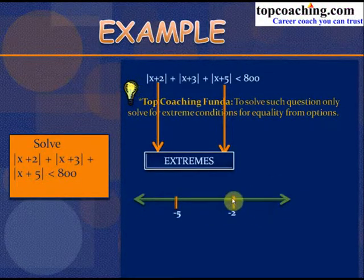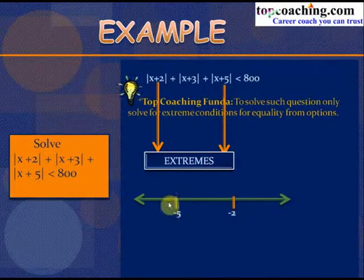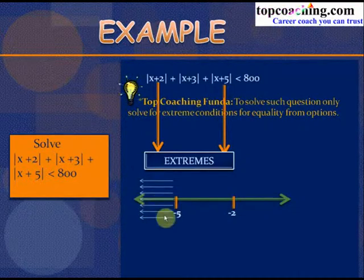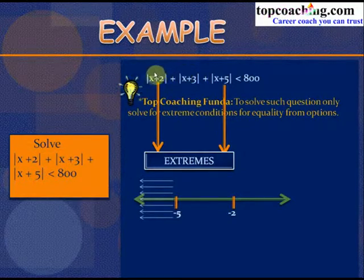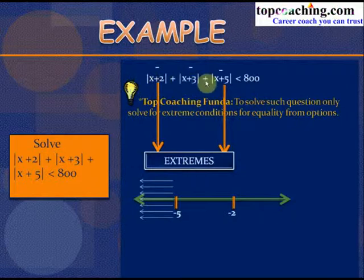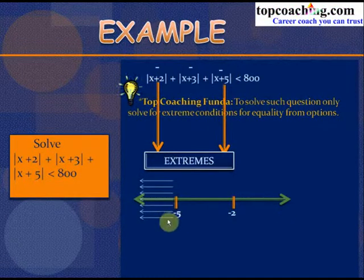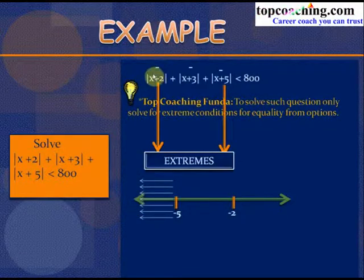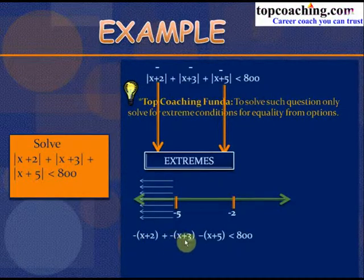When x < −5, all three quantities are negative, so the inequality becomes −(x + 2) − (x + 3) − (x + 5) < 800. This simplifies to −3x − 10 < 800.